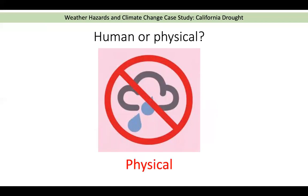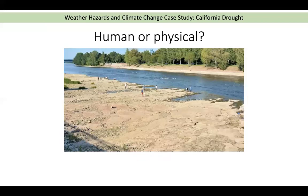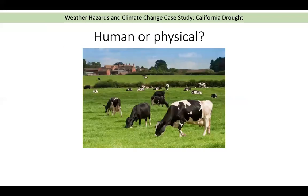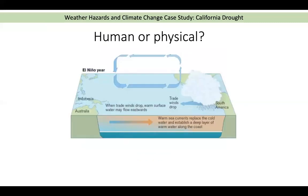Low river levels — that could be human with the dams, but if it happens naturally then that's physical, and it could be a hydrological cause of drought. Farming and agriculture — that one is human. The water is less likely to be intercepted via vegetation if that space has been made for grazing cattle. El Niño — that one is physical.